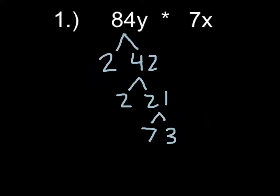It's easier to simplify the radicals before you multiply them together. 7x can't be simplified anymore, so we'll leave that as it is. But we can simplify 84y.